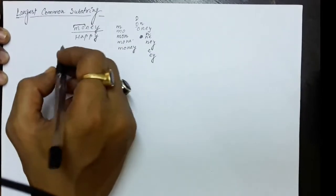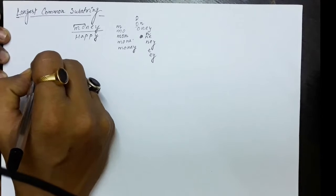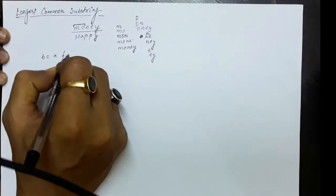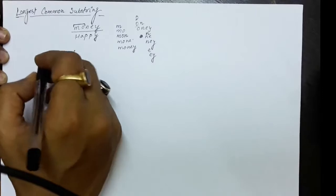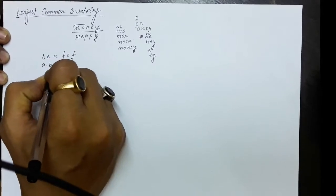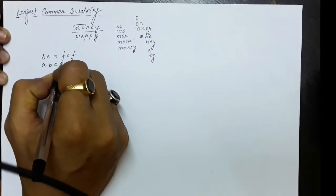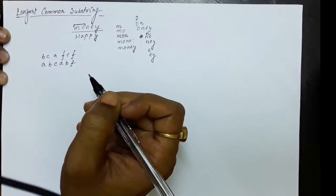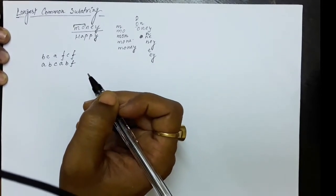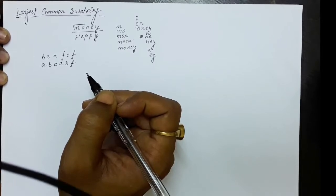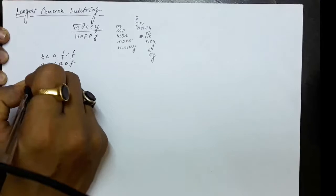If we have been given two strings, for example B, C, A, F, C, F and another string A, B, C, A, B, F — and we are asked what is the longest common substring out of these two strings — how will we find that? Let's try to find out.